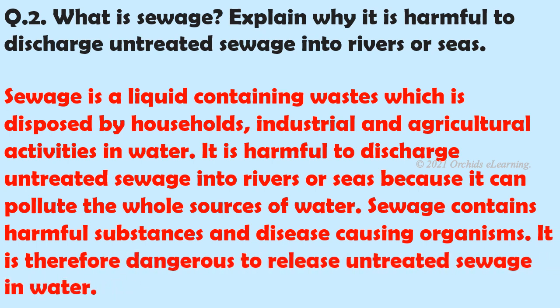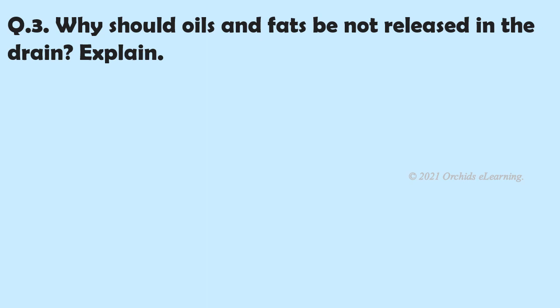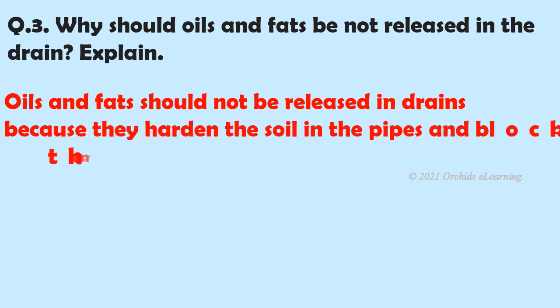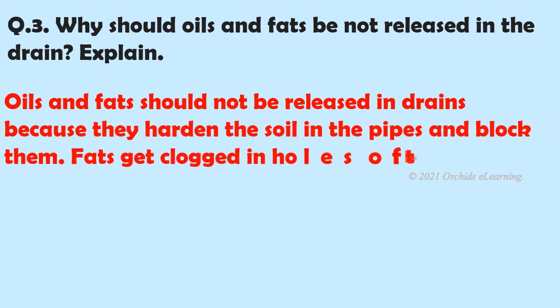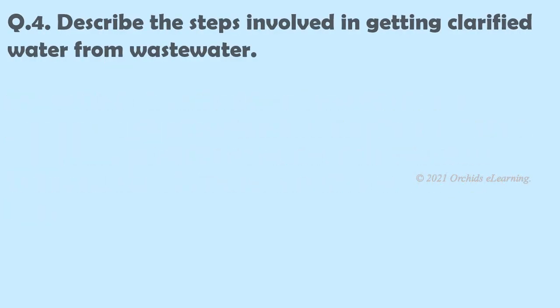It is therefore dangerous to release untreated sewage in water. Why should oils and fats not be released in the drain? Oils and fats should not be released in drains because they harden in the pipes and block them. Fats get clogged in holes of the soil in the drain and block it, which does not allow the water to flow.